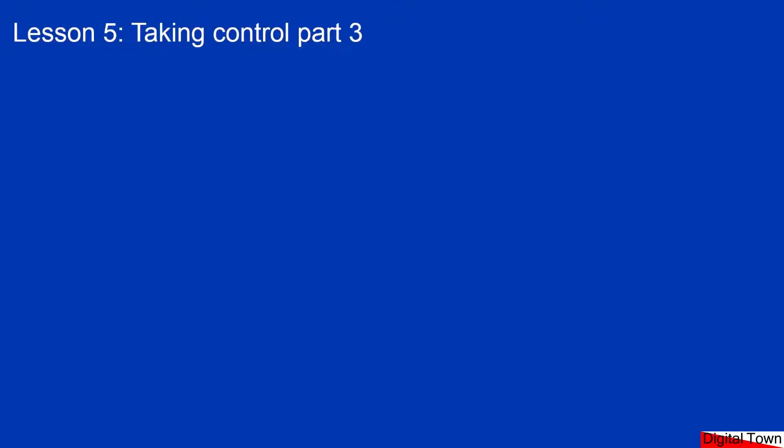Welcome to lesson five of this Arduino C++ course. This is part three of control structures — various ways that we take control of the program. Each lesson is built on the lesson before, so if you haven't done the previous lesson it's probably worth taking a look. A couple of lessons ago we looked at the if and if-else statement, in the last lesson we looked at the for loop and how the two could be combined, and in this lesson we're going to add another control structure called the switch statement.